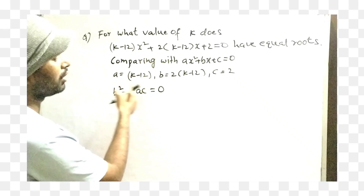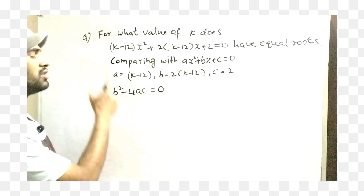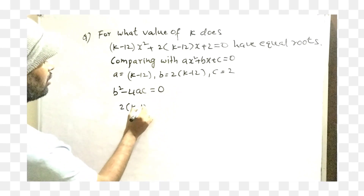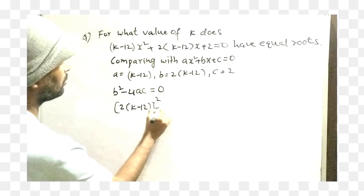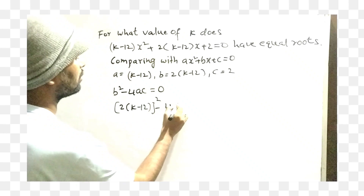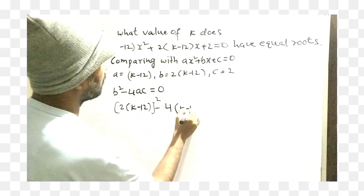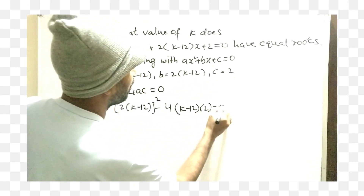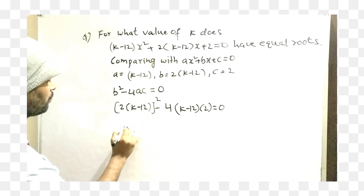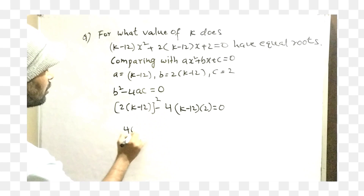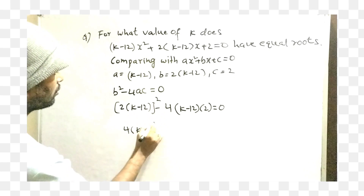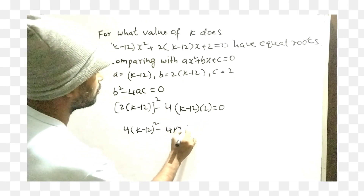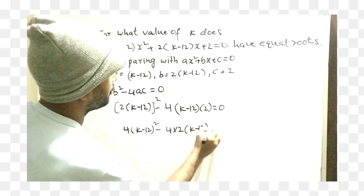Substitute all these values — a, b, and c — into this equation. b is 2(k minus 12), so: 2(k minus 12) whole squared minus 4 times (k minus 12) times 2 equals 0. That gives 4(k minus 12) squared minus 4 into 2 into (k minus 12) equals 0.